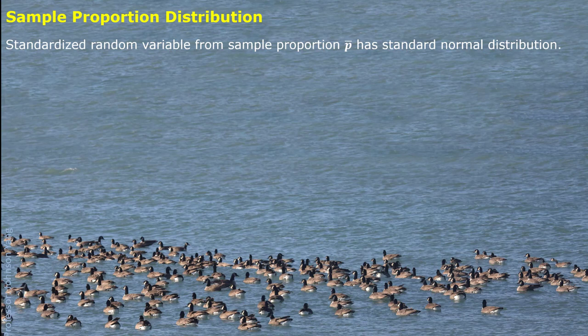All these ideas can be applied for estimating another population parameter: proportion, or testing a hypothesis about the population proportion. There is a relationship between the binomial distribution and the normal distribution, which is why the proportion from a sample is considered as a random variable. When we standardize this random variable, it follows the standard normal distribution.